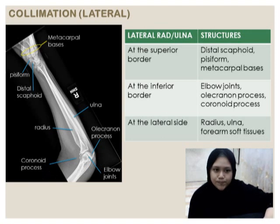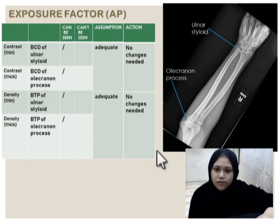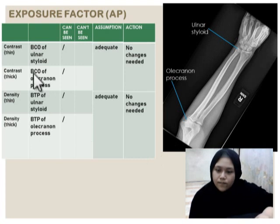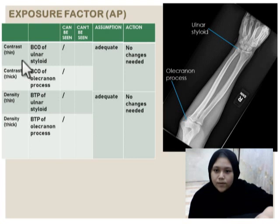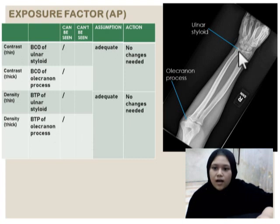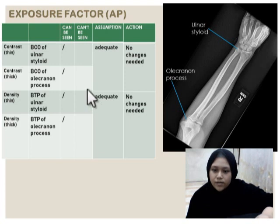For exposure factors for AP: for contrast, bony cortical outline of the thin structure which is ulna styloid can be seen, and bony cortical outline of the olecranon process can be seen.